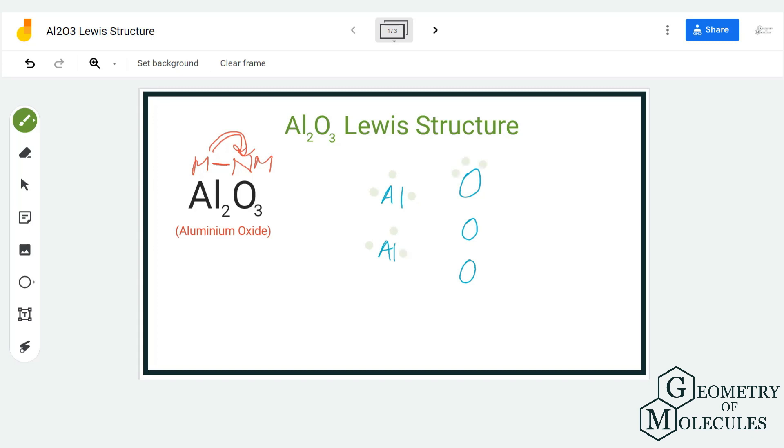Now as I mentioned, metals will give away their electrons to the non-metals, and hence all these electrons around aluminum will be shifted to the oxygen atoms. So each oxygen will take away two valence electrons of aluminum.